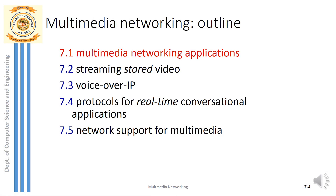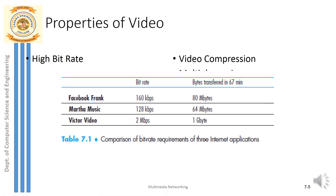Let's start with the first topic, Multimedia Networking Applications, and begin with the discussion of properties of video. What is the meaning of a video? Video is a collection of continuous frames. In order to watch a video, a user needs high bandwidth if he wants to watch online, which means he has to stream a video.